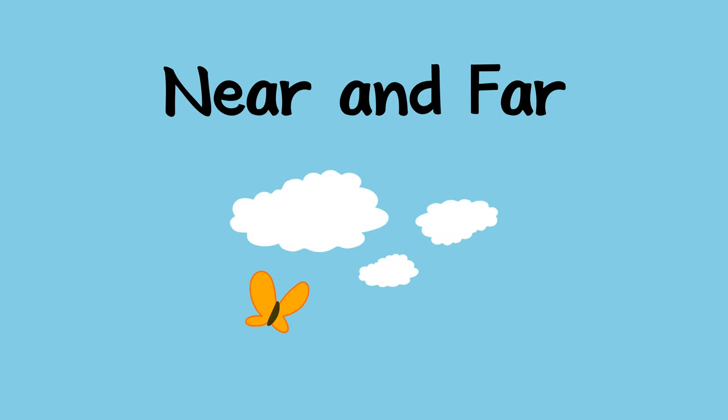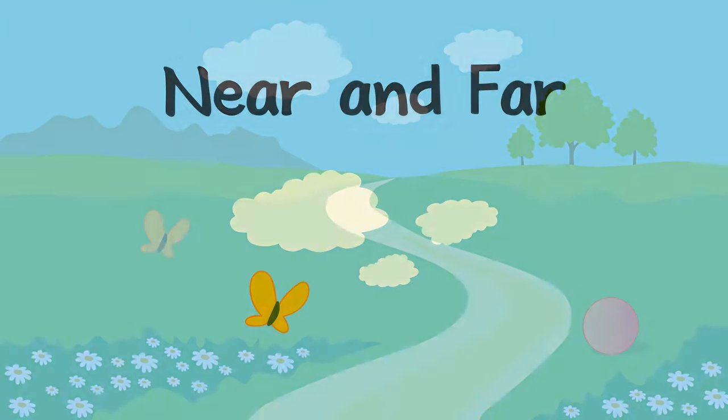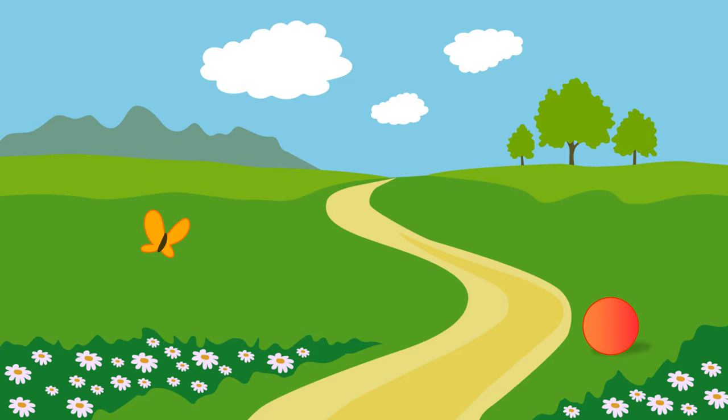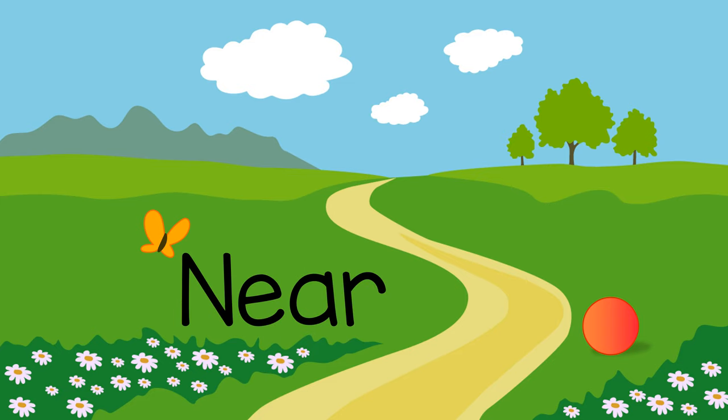Here is a game to help a child learn about near and far. You can ask, can you find something that is near? And the child can find something near to them, like a flower, a ball, or a butterfly.